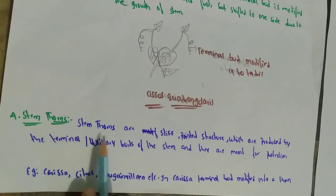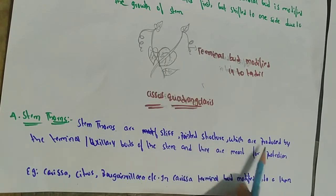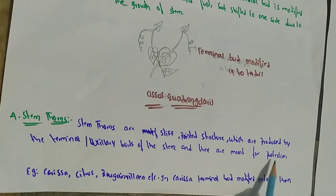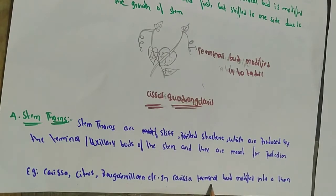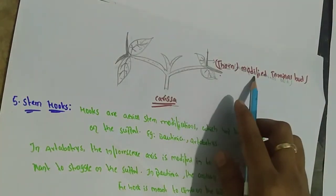Stem thorns are stiff, pointed structures produced by the terminal or axillary buds of the stem. They are meant for protection. Examples include Carissa, Citrus, and Bougainvillea. In Carissa, the terminal bud is modified into thorns.